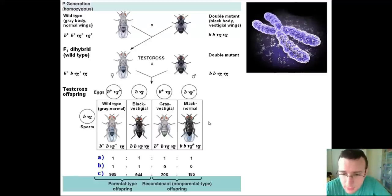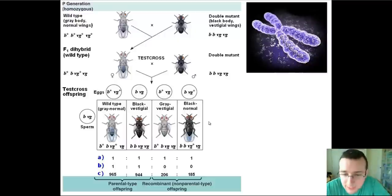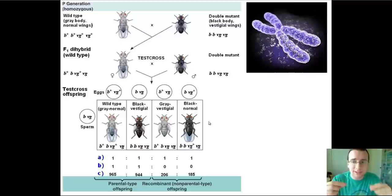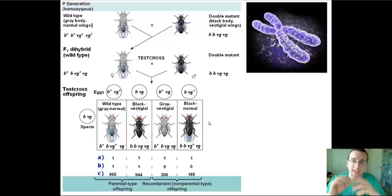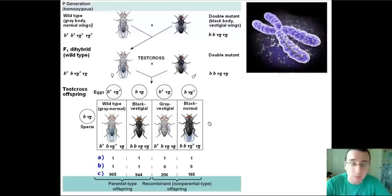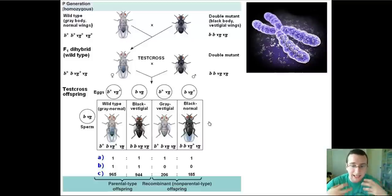Thomas Hunt Morgan studied Drosophila melanogaster — fruit flies — and noticed that because traits were in the same chromosome, some of them would travel together. Remember, each chromosome has thousands of genes inside it, which means two traits may be found inside the same chromosome. Since it's the chromosomes that independently assort, if one chromosome goes one way the other goes a different way, but the genes within the same chromosome will travel together during meiosis. That means there's going to be linkage.